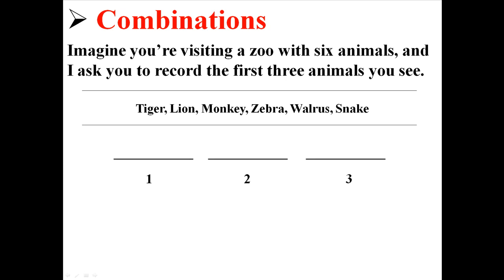Now I'm going to take the numbers away so it's not confusing. Now in the first spot, there are six different animals you could see. But in the second spot, because you've already seen one of the animals, there are only five things you can see. And in the third spot, because you've already written down two of the animals, there are only four different animals you can see.